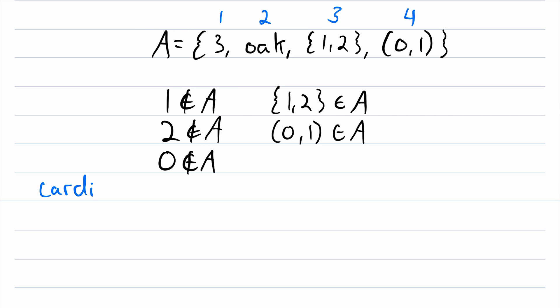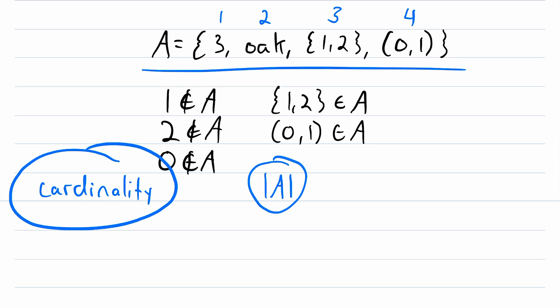We call the number of elements in a set the cardinality of that set. So the cardinality of A is 4, because the set A contains 4 elements. And we write this to denote the cardinality of A. It's the set A with what you might recognize as absolute value bars on either side. So we can write that the cardinality of A is equal to 4.